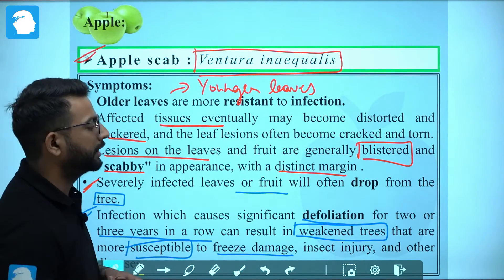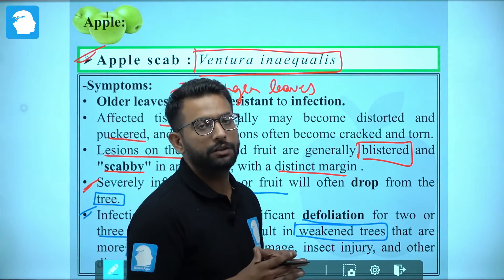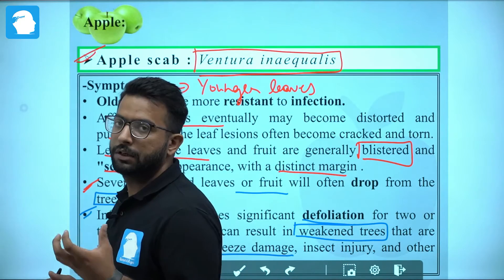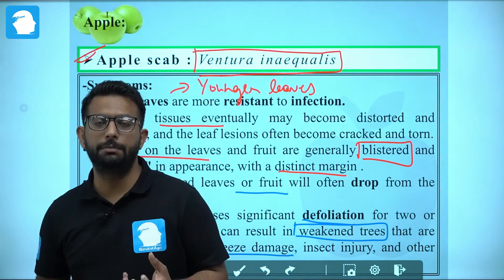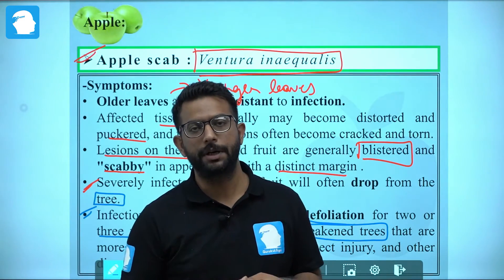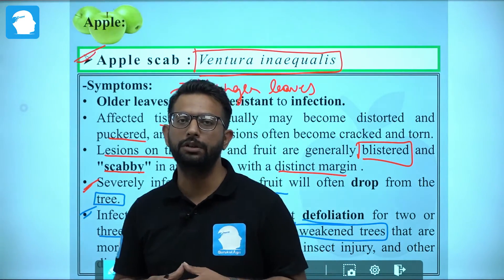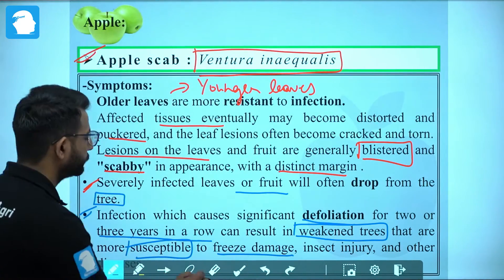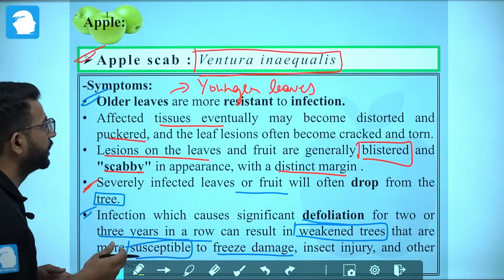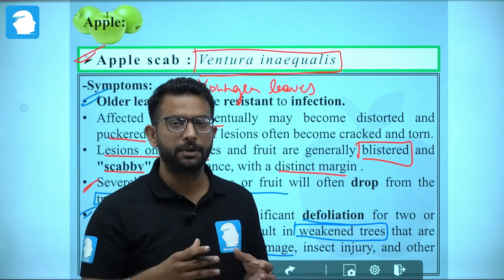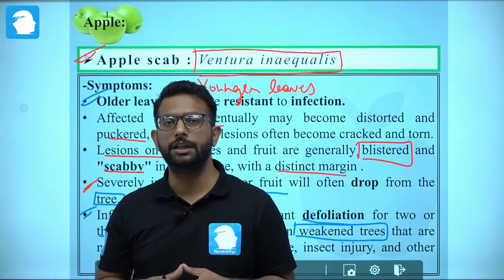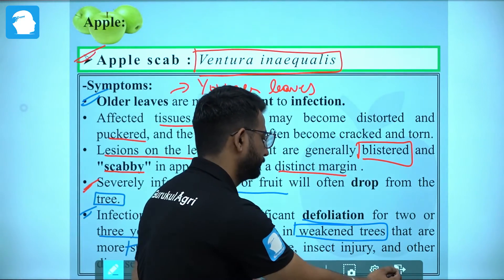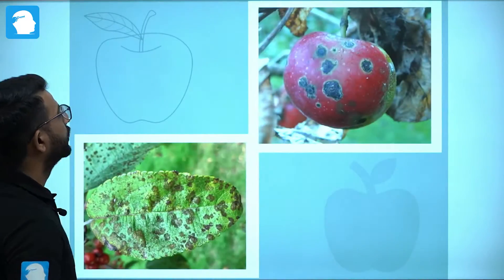Due to more and more defoliation, the plant will become more susceptible to insect pest attack and more susceptible to freeze damage and disease. These were the symptoms produced by apple scab, caused by the fungus Venturia inaequalis.